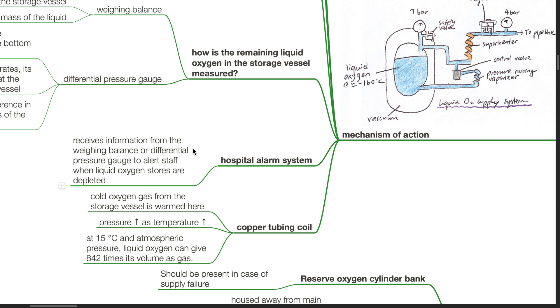Hospital alarm system: Receives information from the weighing balance or differential pressure gauge to alert staff when liquid oxygen stores are depleted. Copper tubing coil: Cold oxygen gas from the storage vessel is warmed here. Pressure increases as temperature increases. At 15 degrees Celsius and atmospheric pressure, liquid oxygen can give 842 times its volume as gas.